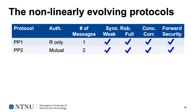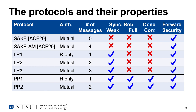The two protocols we present with nonlinear key evolution are called PP1 and PP2. They have one and two messages respectively. These protocols achieve all of the properties we are interested in: full, and therefore also weak, synchronization robustness, concurrent correctness, and forward security. To summarize, the SAIC and SAIC-AM protocols from Avran et al. 2020 do not achieve weak synchronization robustness or concurrent correctness, but do achieve forward security. Our linear protocols LP1, LP2, and LP3 all achieve weak synchronization robustness and forward security, but not concurrent correctness. Our nonlinear protocols PP1 and PP2 using puncturable PRFs achieve full synchronization robustness, concurrent correctness, and forward security. These protocols achieve everything we want, but we do have to sacrifice some efficiency due to the nature of the puncturable PRF.